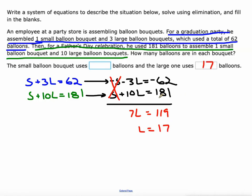We still have to figure out how many are in the small, so I'll take this bottom equation and plug that 17 in for L. Once I plug that 17 in, I can solve for S: S + 170 = 181. When I subtract 170 from both sides, we get S = 11. So 11 balloons in a small bouquet and 17 in a large one.